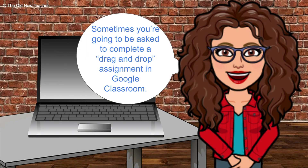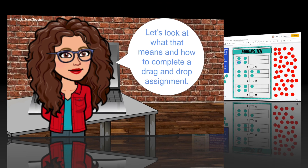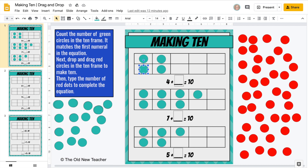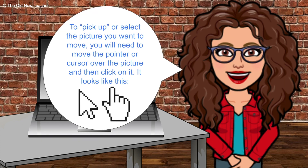Sometimes you're going to be asked to complete a drag and drop assignment in Google Classroom. Let's look at what that means and how to complete one. This is what a drag and drop assignment might look like whenever it's assigned to you. After you decide which picture you want to drag and drop, you need to pick it up with your pointer. To pick up or select the picture you want to move, you will need to move the pointer — or sometimes people call it the cursor — over the picture and then click on it. The pointer is going to look like this.